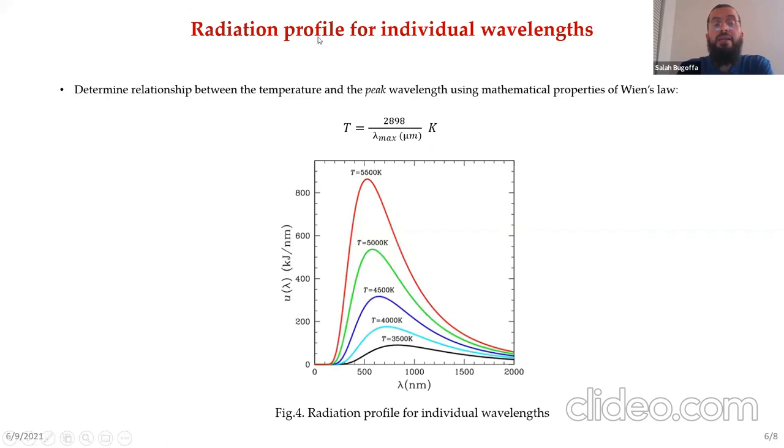This is a radiation profile of individual wavelength that will be used to compute the efficiency of each solar cell that will be placed to observe a specific wavelength in the YZ plane.